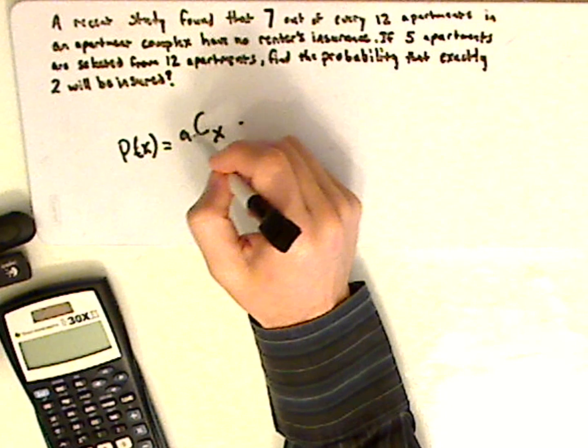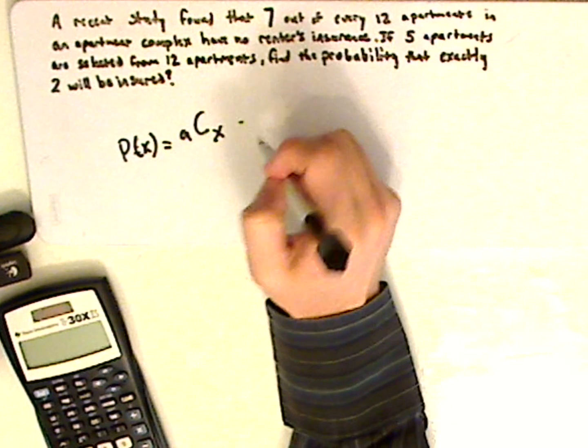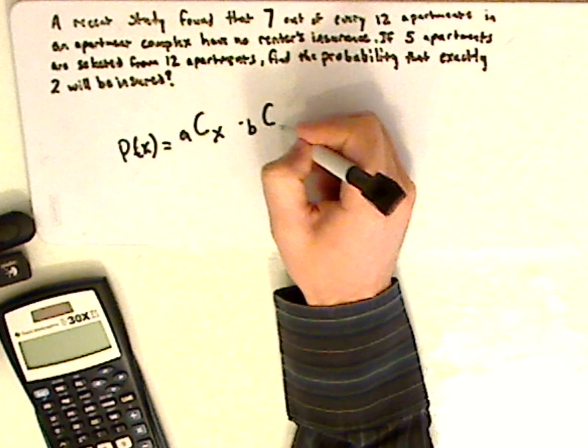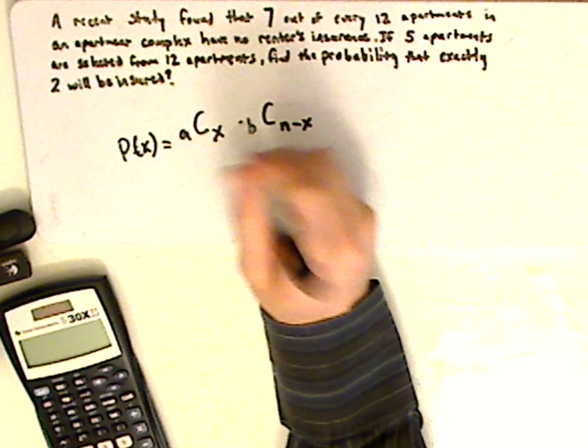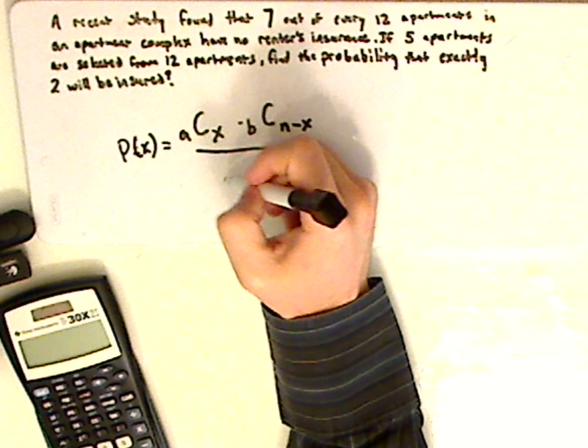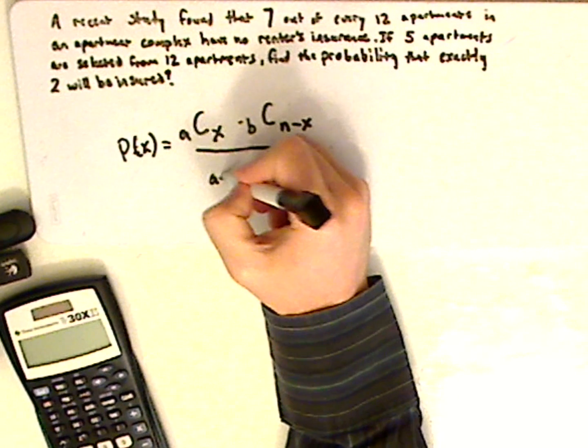So you have A, combinations of X. B, combinations of N minus X over A plus B.